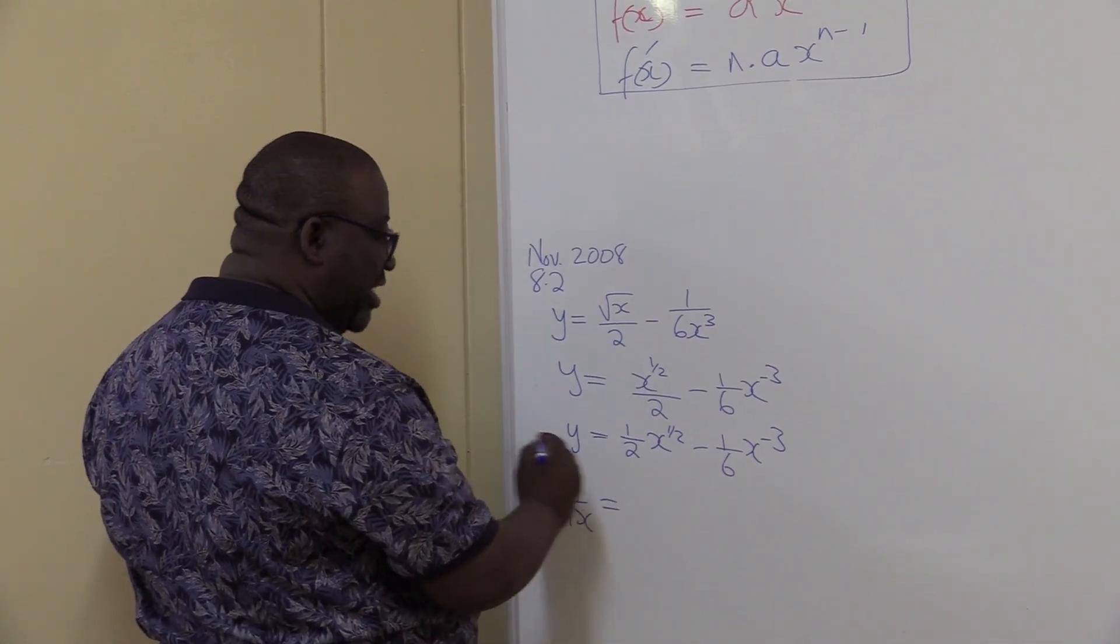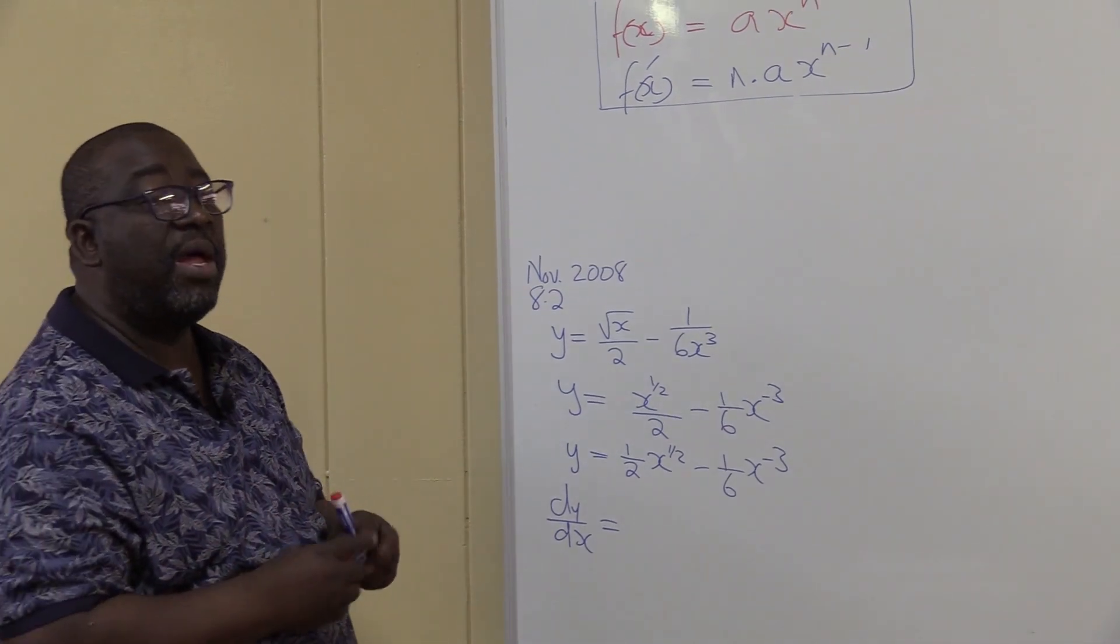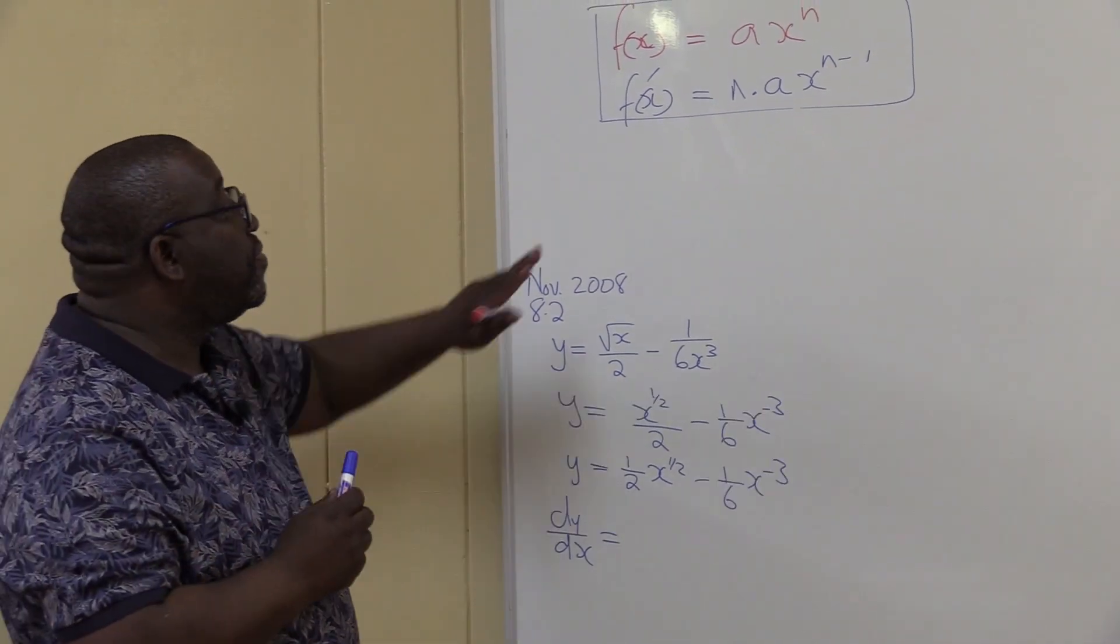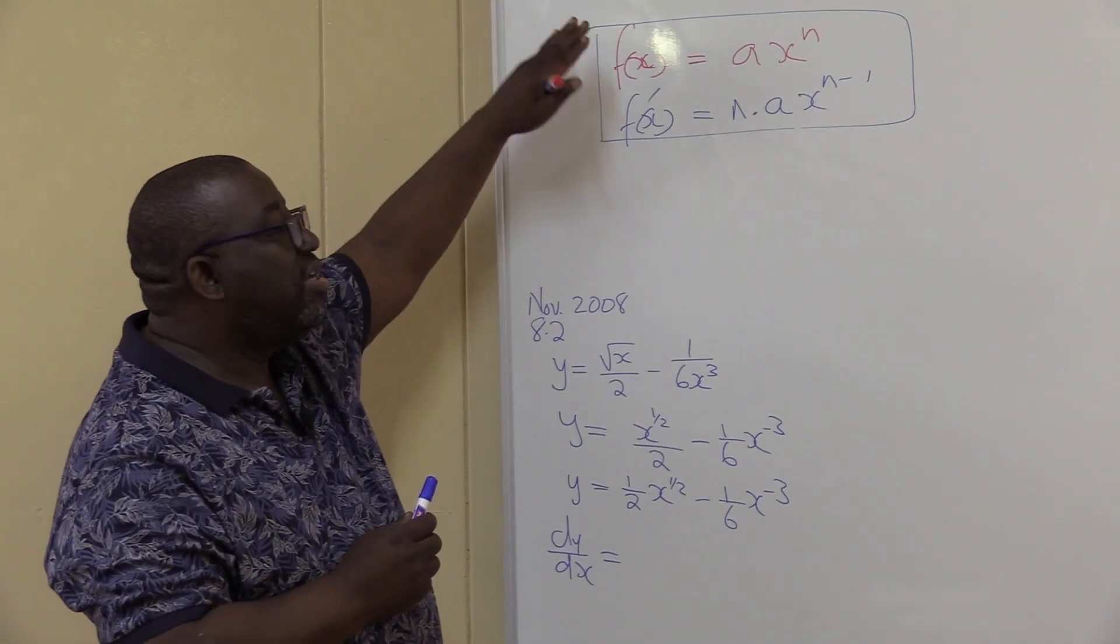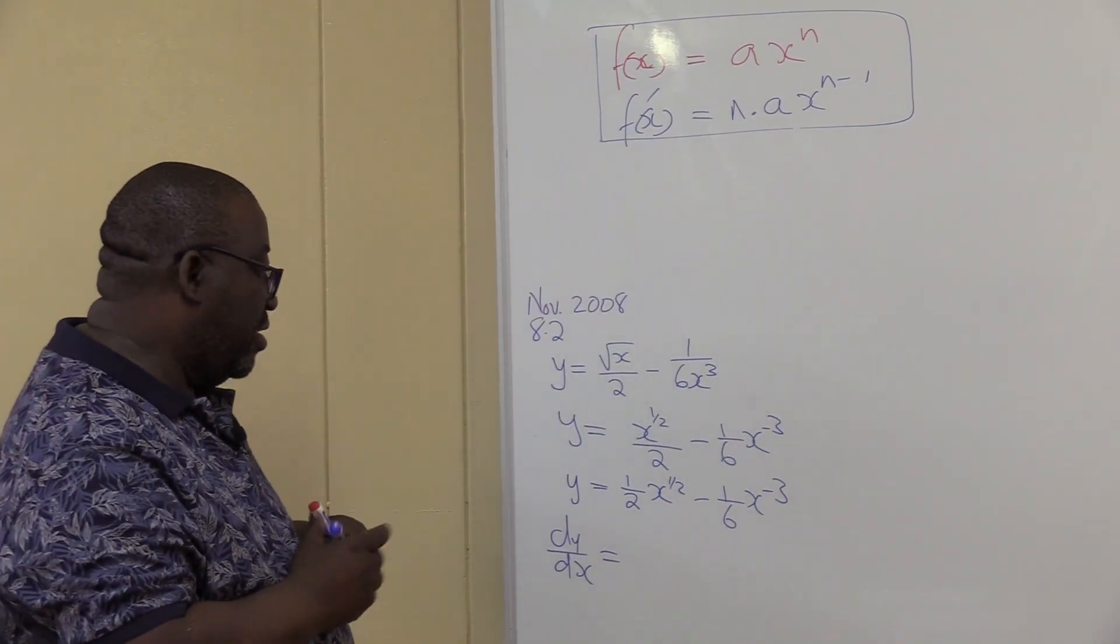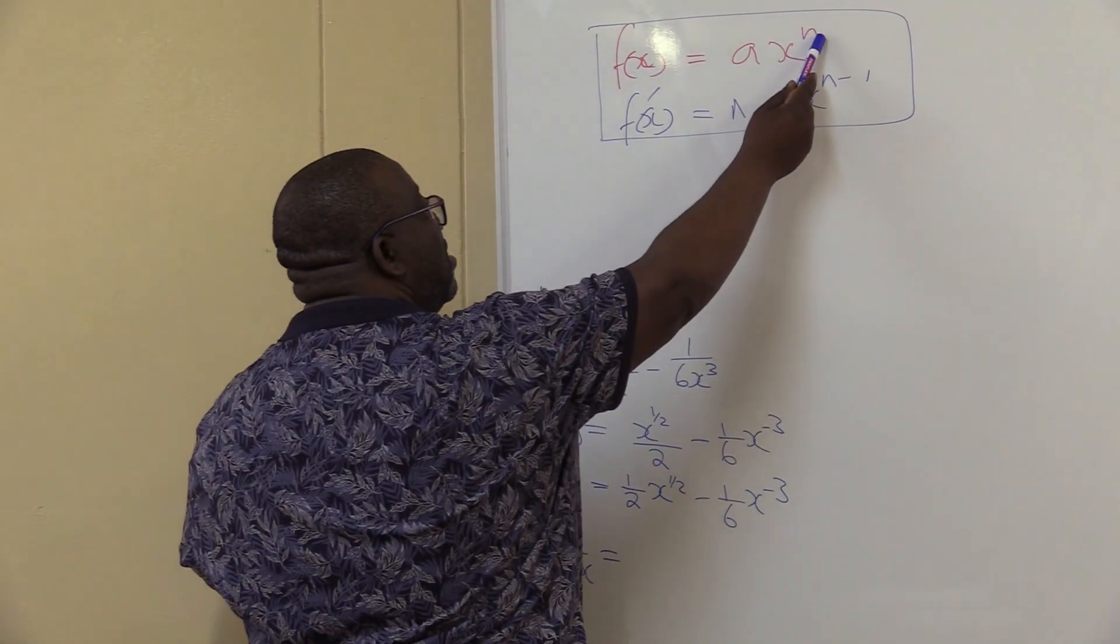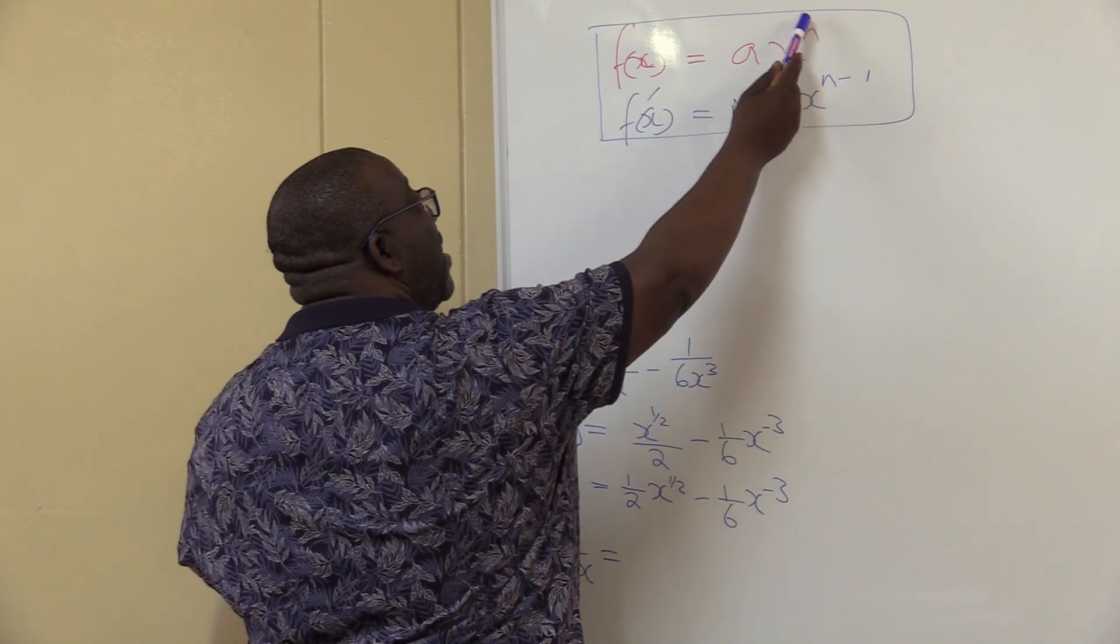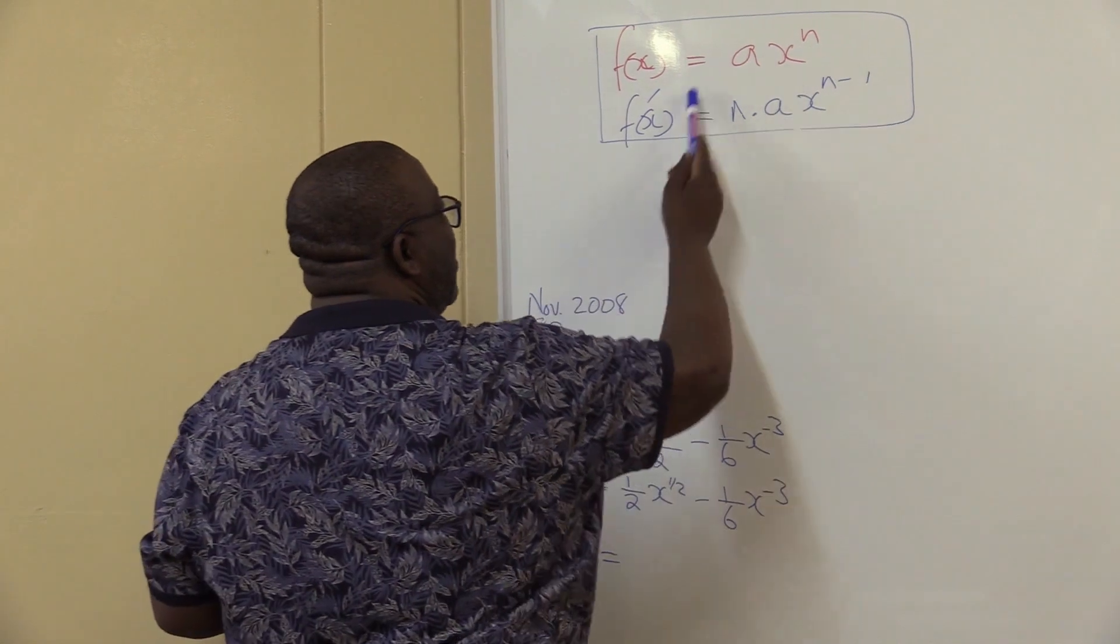This is where I'm starting to differentiate. There I was not differentiating, I was just arranging it in the form ax to the power n. This is the most important rule when we differentiate using rules. Let's now differentiate. Now I said you take the exponent, you multiply it with the coefficient, then you subtract 1 in the exponent. This is where this comes from.